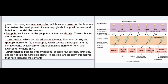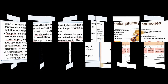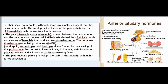Basophiles are located at the periphery of the pars distalis. Three subtypes are represented: (1) corticotrophs, which secrete adrenocorticotropic hormone (ACTH) and lipotropic hormone; (2) thyrotrophs, which secrete thyrotropin; and (3) gonadotrophs, which secrete follicle-stimulating hormone (FSH) and luteinizing hormone (LH). Chromophobes possess little cytoplasm and few secretory granules and do not take up histologic stains. These cells are probably chromophiles that have released the contents of their secretory granules, although some investigators suggest they may be stem cells.